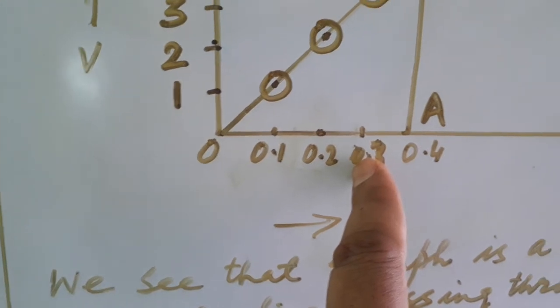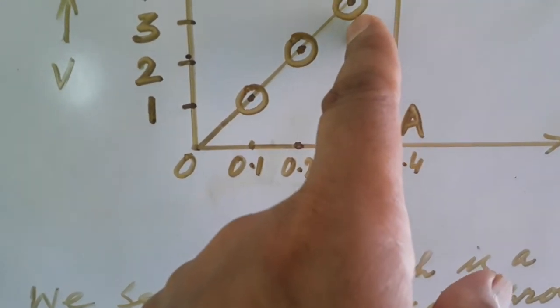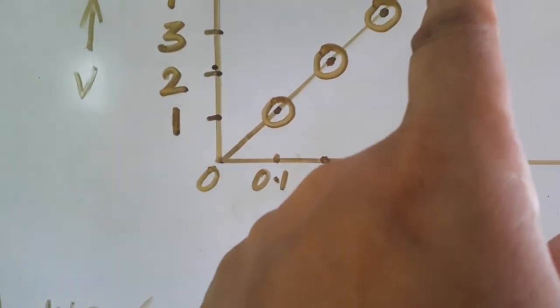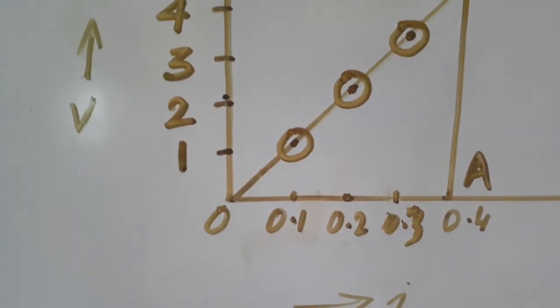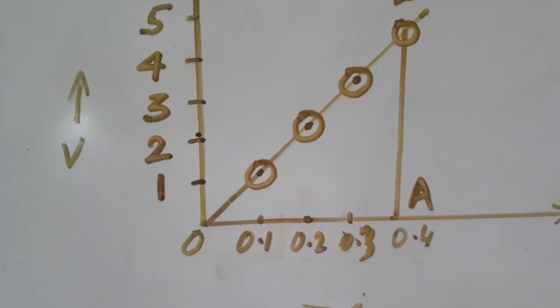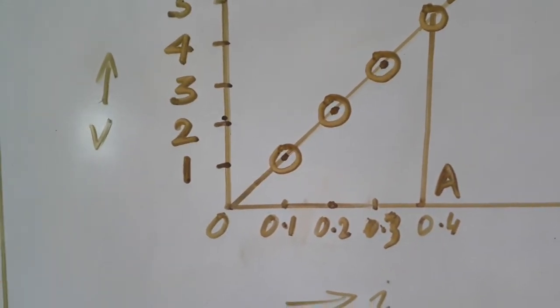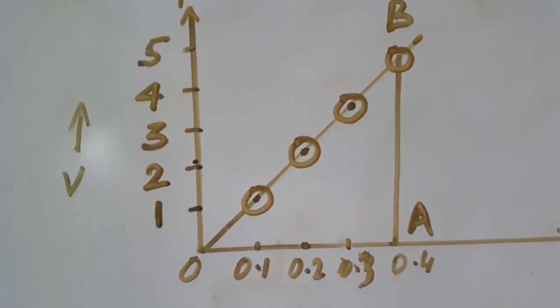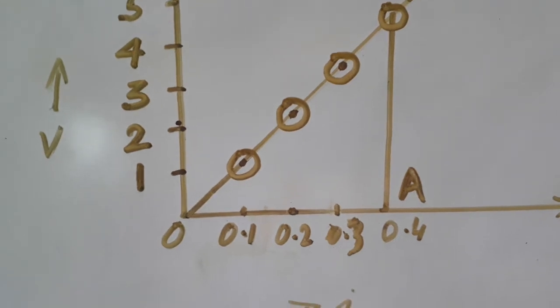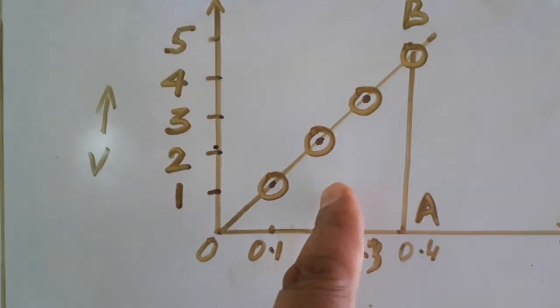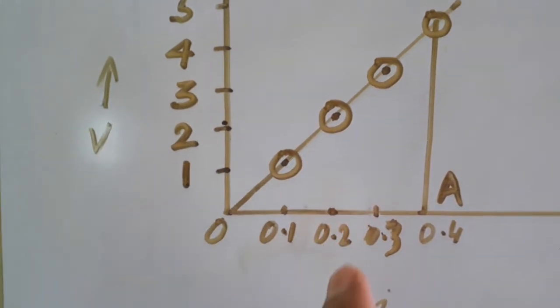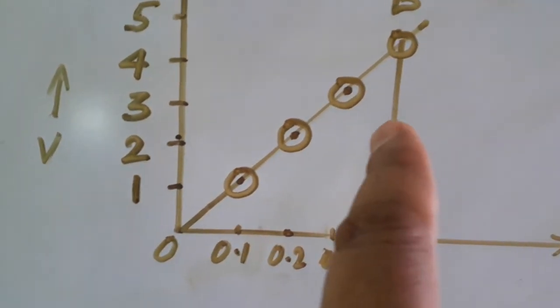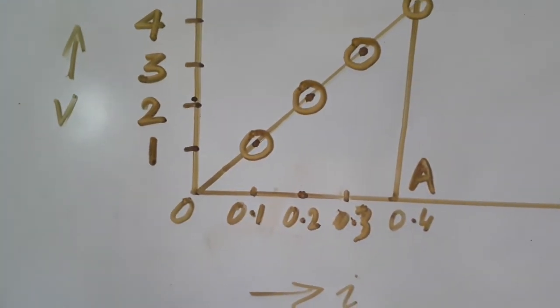At 0.3 ampere current, you are getting the value of 3.6 volt. In this way, you are getting 4 dots because you have given 4 observations here that you have to plot in this graph. After joining all the 4 dots, you will get a straight line and this proves Ohm's law because I is directly proportional to V. This graph shows that I is directly proportional to V and the straight line is passing through origin, so it proves Ohm's law.